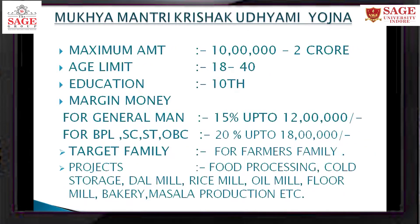The last scheme is Krishik Udyami Yojana. In this yojana, the amounts are similar, but it is specifically for farmers who have their own land. They can apply using their land. This scheme is especially for Krishik Udyami, providing food processing, cold storage, rice mills, masala production, and related industries. Industry or mill production can be started under this scheme.